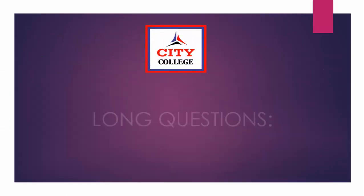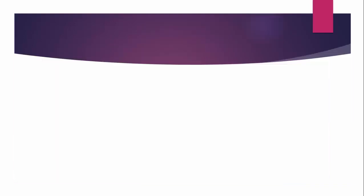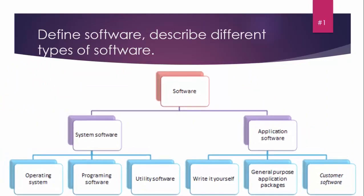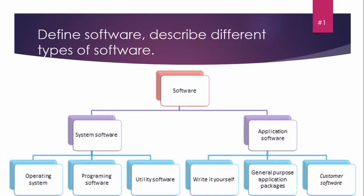The last part of the paper is long questions. Question number one: Define software and describe different types of software. Look at the diagram showing what software is. Software is a set of instructions given to the computer to perform a specific task. Software has two types: system software and application software. System software works systematically - without it the system cannot work. That is system software, a need of the system.